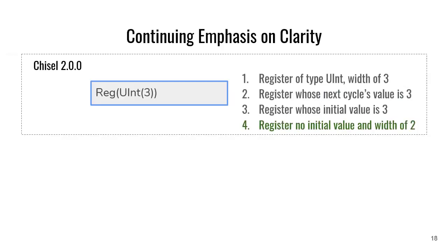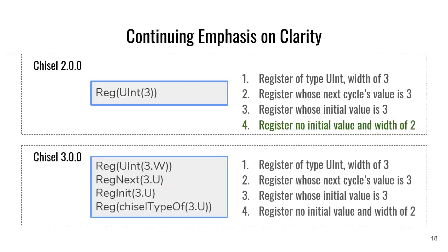The actual answer is: it's a register with no initial value and a width of 2. What was happening in Chisel 2 is this is a constructor of a register expecting a type, but Uint(3) is the way of declaring a literal 3. What it used to do is look at the type of that thing and take it — a literal with a value of 3 has a width of 2, so that's how you get that, which is super confusing to new users. Chisel 3 is way better in this regard. We've thought about this problem, which is why you may see things like .w's and .u's — it's to clarify these types of things to make it easier to see what code means.